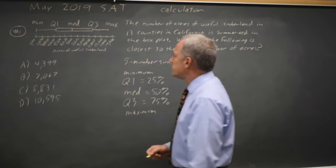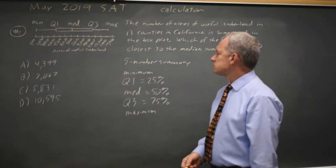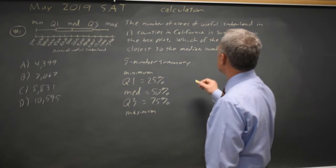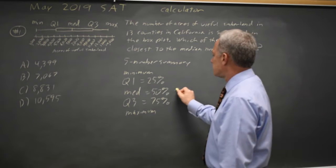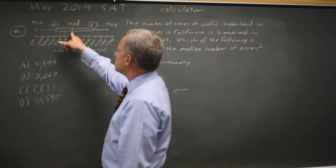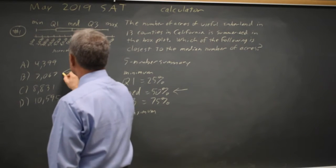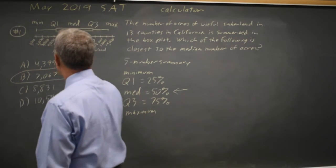You can find the range from the box plot because it's the maximum minus the minimum. But in this case, they're asking for the median number of acres, which is the vertical line inside the rectangle. And that's a little more than 7,000, so the correct answer would be B.